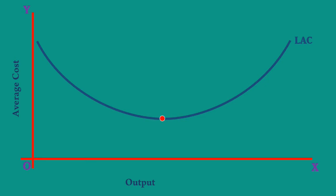After that, the Long Run Average Cost Curve slopes upward. It means, in this segment, the average cost increases.